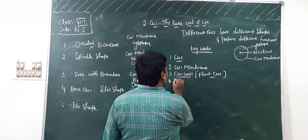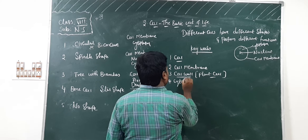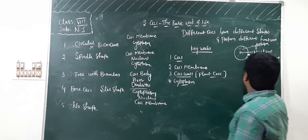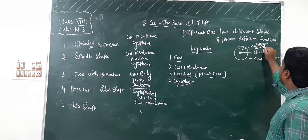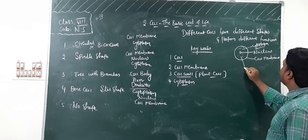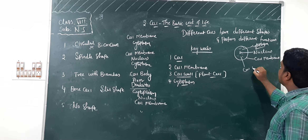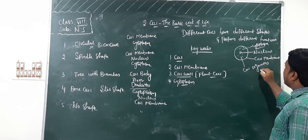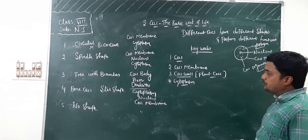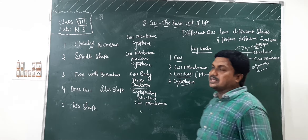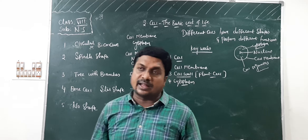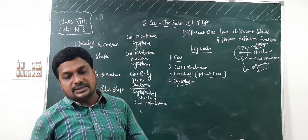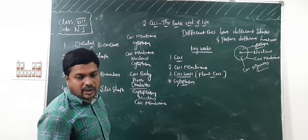Next keyword is cytoplasm. The jelly-like substance inside the cell is known as cytoplasm. There you can find cell organelles — cell organelles means parts of the cell. Different cell organelles are found in the cytoplasm.